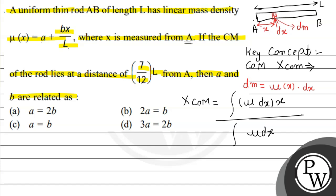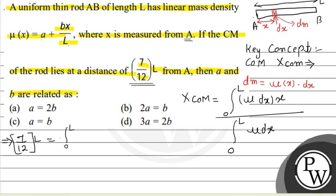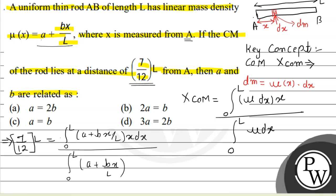The integration will vary from 0 to L, since the complete length is L. So we have limits 0 to L in both numerator and denominator. The given value of x_cm is 7/12 times L. Substituting the linear mass density equation A + Bx/L into the integrals: numerator is ∫₀ᴸ (A + Bx/L)·x dx, denominator is ∫₀ᴸ (A + Bx/L) dx.